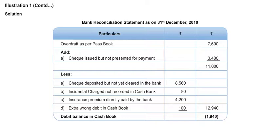On 31st December, cash deposited in bank was 385, but the cashier debited the bank column with 485 by mistake. The entry was correctly made in the passbook — so there was no error in the passbook, but the error happened in the cashbook. The cashier has shown 100 rupees higher in the bank column, meaning he has shown reduced overdraft in the cashbook by 100 rupees. As compared to passbook, our overdraft balance in cashbook will be lower by 100. So you will deduct 100 rupees — extra wrong debit in cashbook.